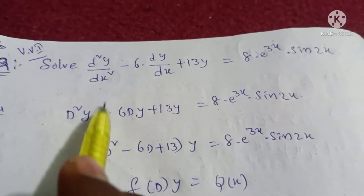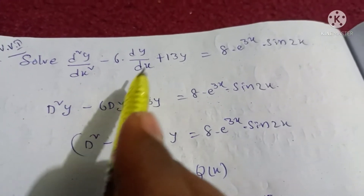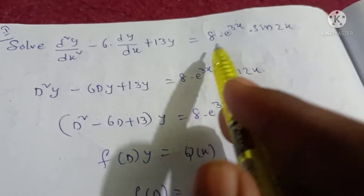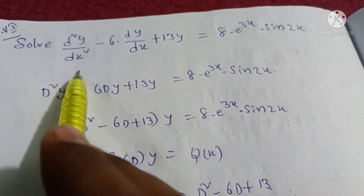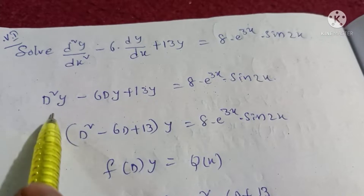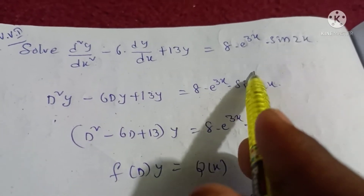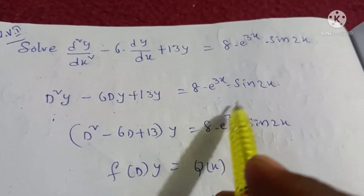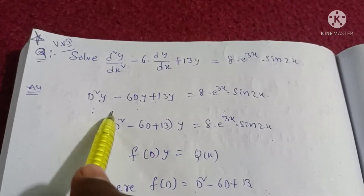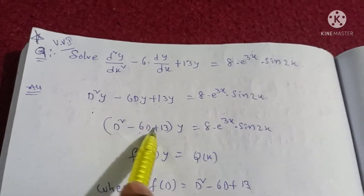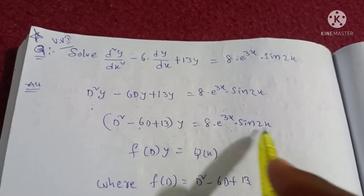Question. Solve d²y/dx² minus 6 times dy/dx plus 13 times y is equal to 8 times e^(3x) times sin(2x).